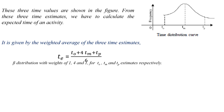In this beta distribution, the weights are 1 for T0, 4 for Tm, and 1 for Tp — giving more weightage to the most likely time estimate. So the expected time for the activity is Te = (T0 + 4Tm + Tp) / 6.